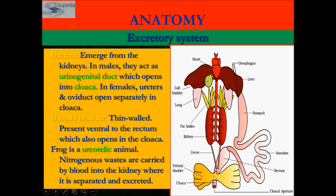Frogs are ureotelic animals, meaning the nitrogenous waste is carried by blood into the kidney where it is separated and excreted. This was all about the excretory system found in frogs. In the next section of the presentation, we will be studying the nervous system of frogs, so stay tuned and keep watching Wikipedia World videos.